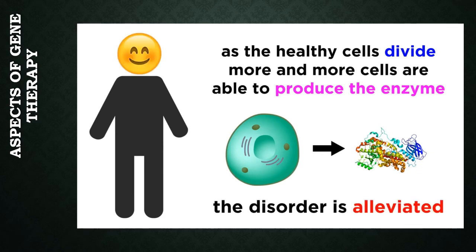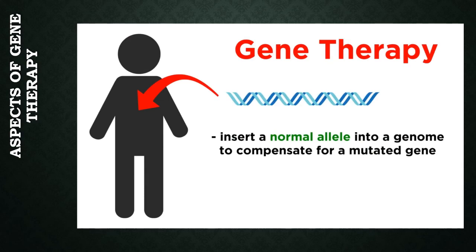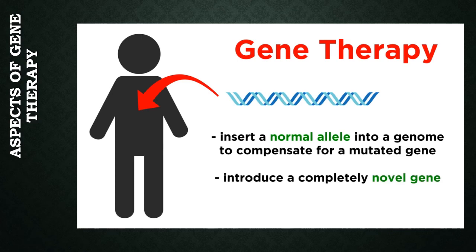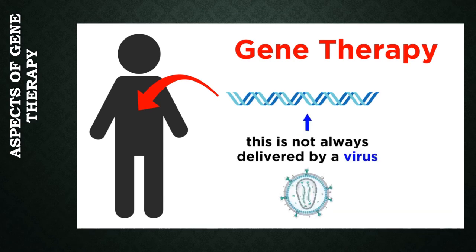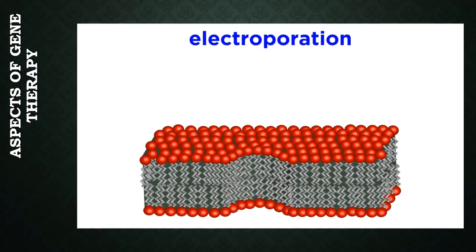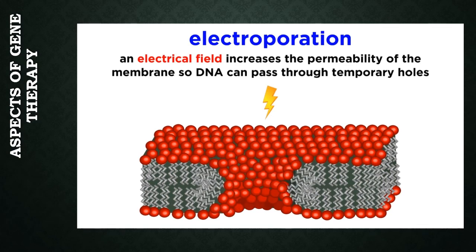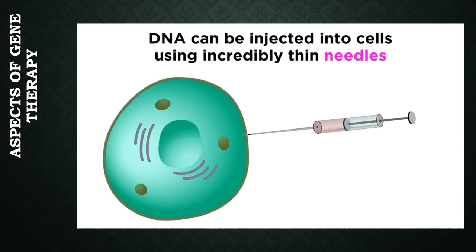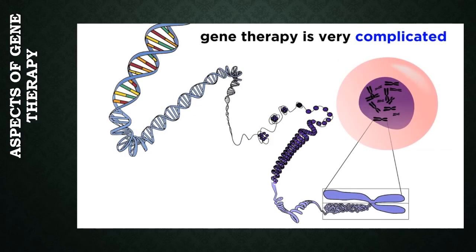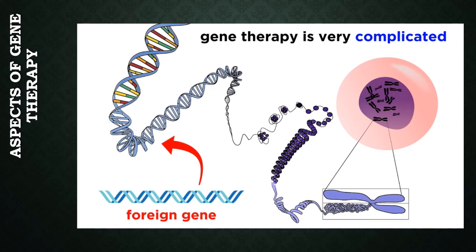Gene therapy can involve inserting a normal allele to compensate for a mutated gene, introducing a completely novel gene, or knocking out a mutated gene so it will not be expressed. The novel DNA is not always delivered by a virus — techniques include electroporation, where an electrical field increases cell membrane permeability so DNA can pass through tiny temporary holes, and microinjection, where DNA is injected into cells with incredibly thin needles.